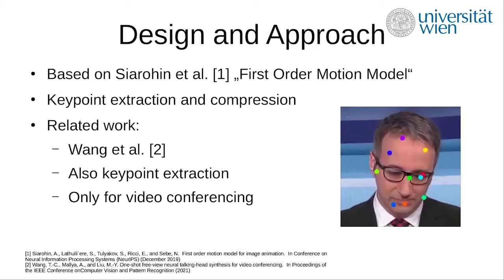This led to the idea of extracting key points and motion information, compressing them, and sending this information over a network to a receiver. Key points are points in a video that are consistent within the category — for example, eyes on a face. These key points are on certain areas of a model and must be consistent for the neural network, though they do not necessarily mean anything to a user.